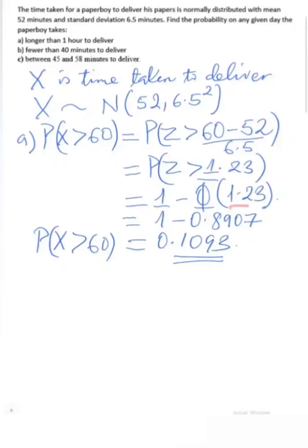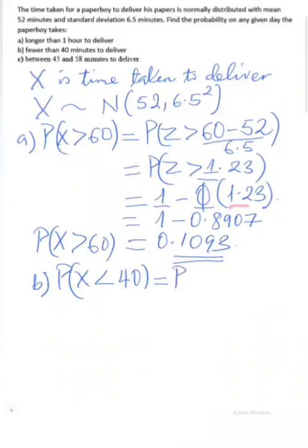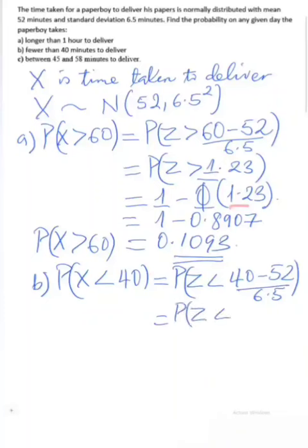In part (b) we are asked for the probability that fewer than 40 minutes are taken, so we want P(X < 40). We standardize: P(Z < (40 − 52) / 6.5) = P(Z < −12/6.5), which gives P(Z < −1.85) to two decimal places.